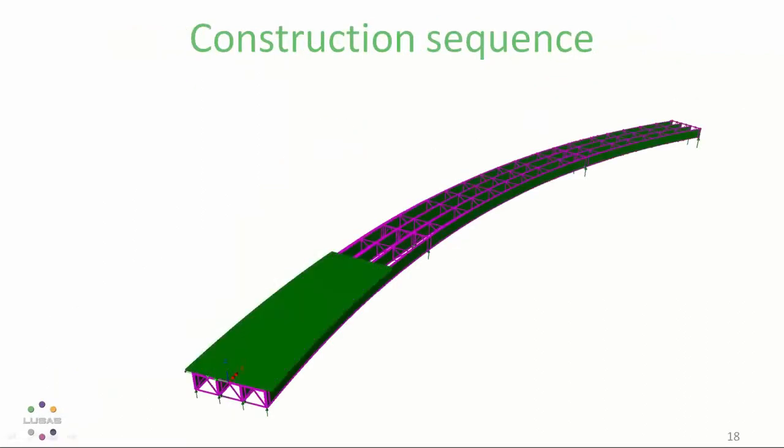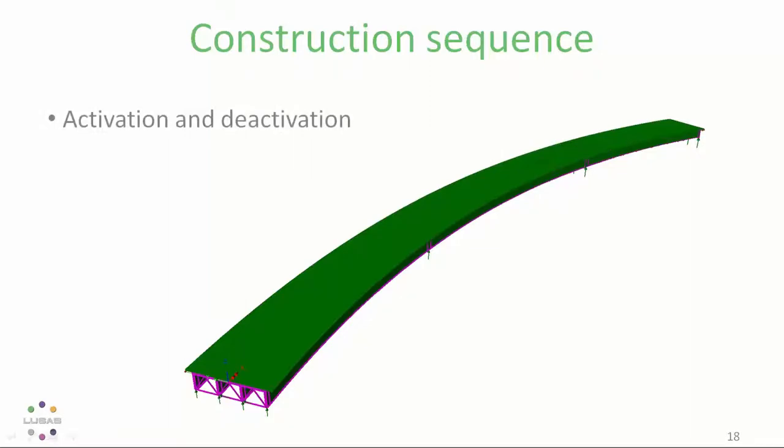And of course similar results are available for the fully composite bridge as well. Now in a real construction project the pouring sequences might be used to mitigate against cracking in the slab and this could be modeled in LUSAS using activation and deactivation. And together with time inputs and creep and shrinkage material you can build up quite a detailed picture of any construction sequence.